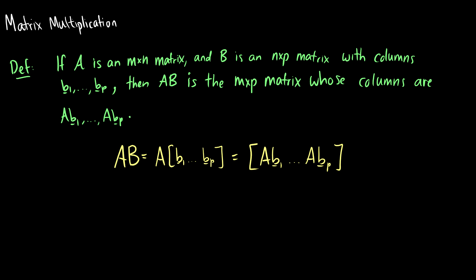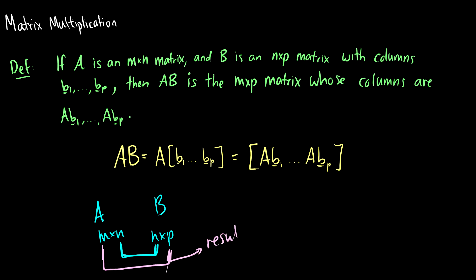So a lot of variables there. Basically we have A being m by n and B being n by p. If this n matches with this n in B, then the resulting matrix is going to be m by p. This only happens if the number of columns in A is equal to the number of rows in B.